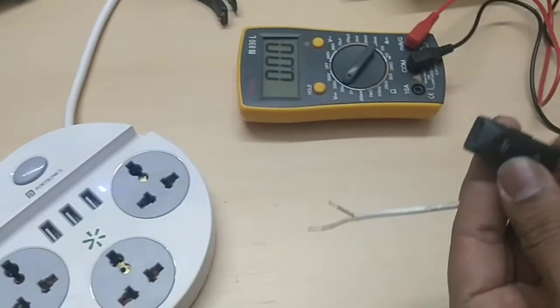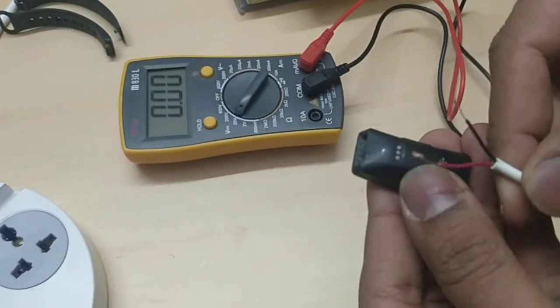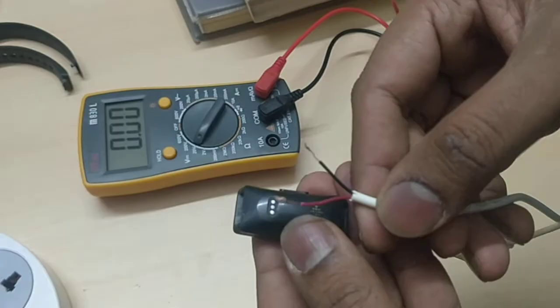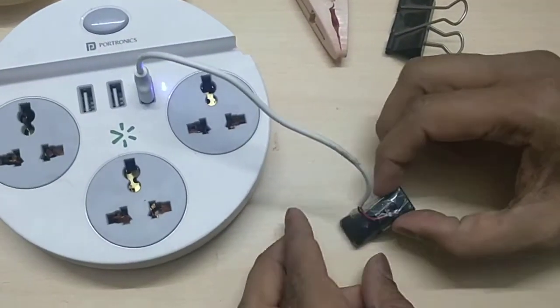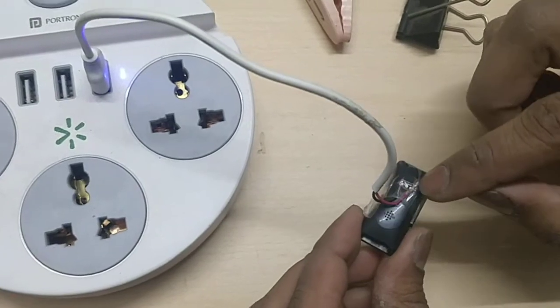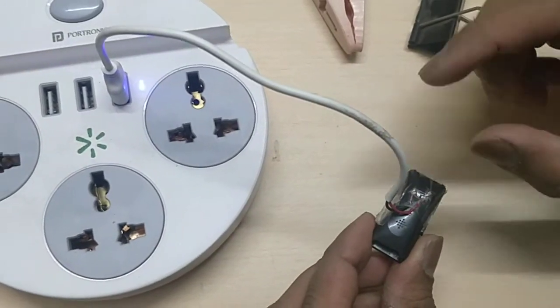So what I'm going to do here is connect these two wires and then see the charging part. So I have connected the terminals as discussed earlier, this is the button, this is the red wire and this is the black wire.